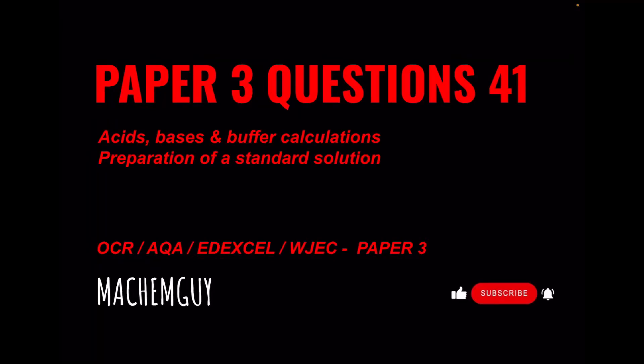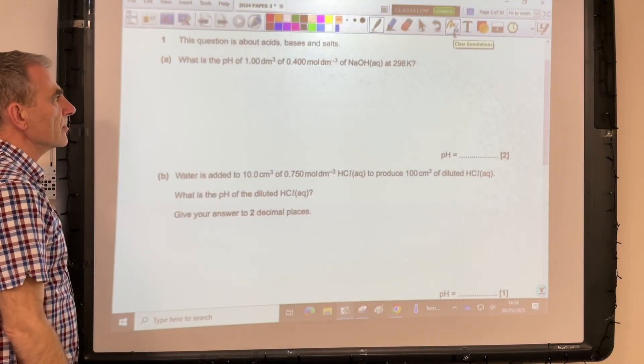Going to the exam question walkthrough for A-level chemistry, this is Paper 3, Question 41. If you want to check out the other videos in the playlist, I'll put the link at the top of the screen. This question deals with acids, bases, and buffer calculations, and then there's a big question on the preparation of a standard solution. Hope you liked the video and find it helpful. If you haven't already subscribed to the channel, I'd love you to do so. The link to the questions is in the description if you want to try it first.